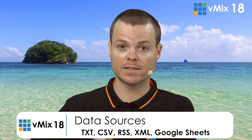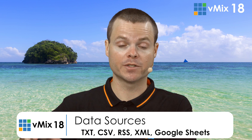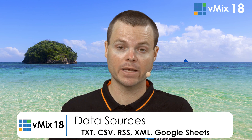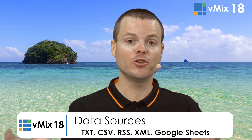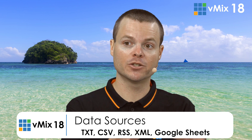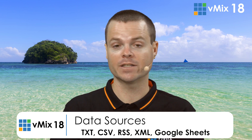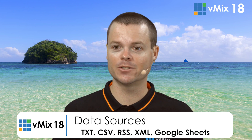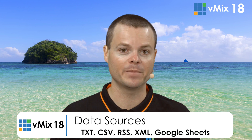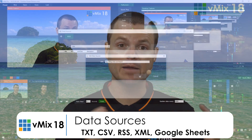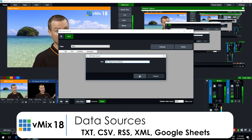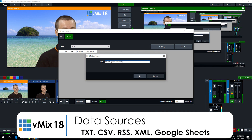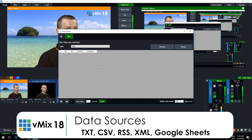For example, you can have a spreadsheet that somebody is maintaining with all the scores and statistics for a sporting match, and then you can have that data assigned to various title templates. You might have a title template that just shows the current score, another title that shows the statistics of the various players, and you can use data sources to do all of that at the same time. You can have multiple data sources and multiple titles and use any data from each in any fields in the titles.